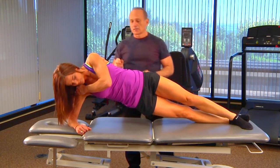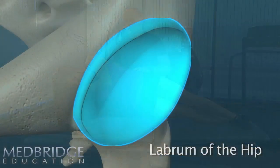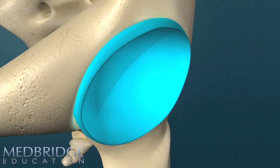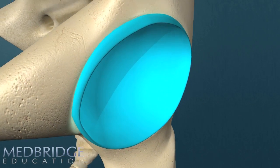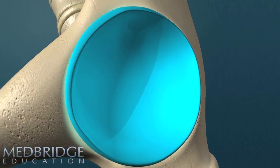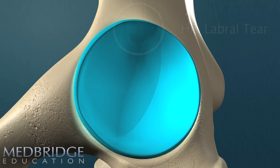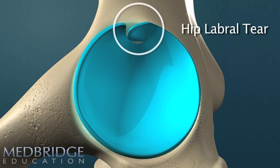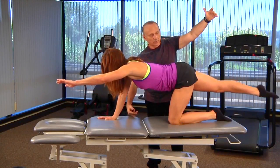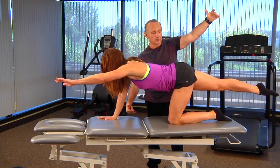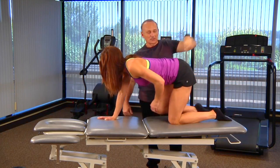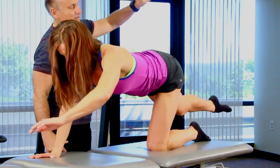Several different types of lower extremity dysfunctions, including hip labral tears, will be discussed. Neuromuscular training and eccentric strengthening will be demonstrated in lab and developed into rehab protocols.